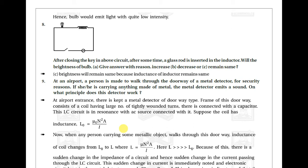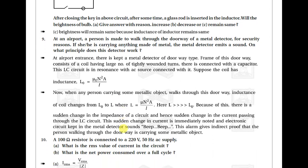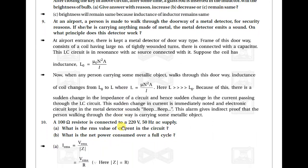After closing the circuit, a glass rod is inserted into the inductor. The brightness of the bulb remains the same because the inductance of the inductor remains unchanged with a glass rod.